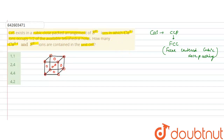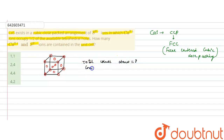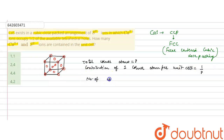Now we calculate the total number of atoms present. Eight atoms are present at the corners of the unit cell, and the contribution of one corner atom to one unit cell is one-eighth, because it is shared by seven more unit cells on all sides. So total corner atoms are eight, and contribution of one corner atom per unit cell is one-eighth. Therefore, number of corner atoms per unit cell = 8 × (1/8) = 1.